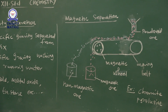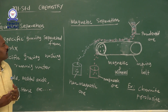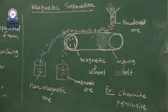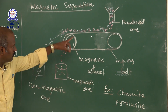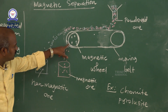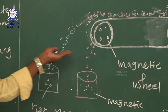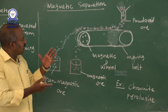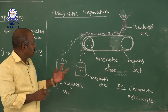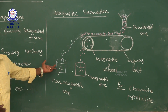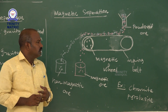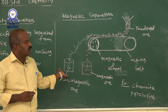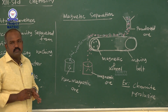Another method of concentration of ore is magnetic separation. In magnetic separation, a magnetic wheel is used. The powdered ore is introduced into the magnetic wheel and moves over it. The ore is separated into two ways: one is magnetic ore and another is non-magnetic ore. This method is used for chromite and pyrolusite. Magnetic particles and non-magnetic particles are separated — that is magnetic separation method.